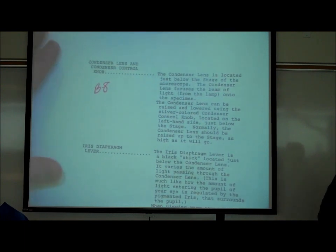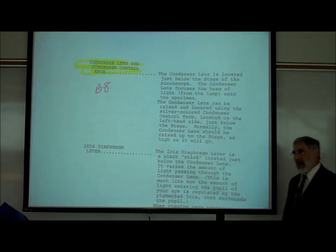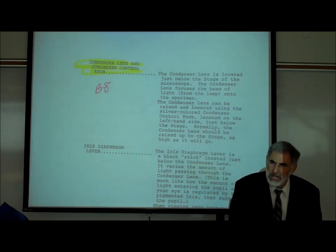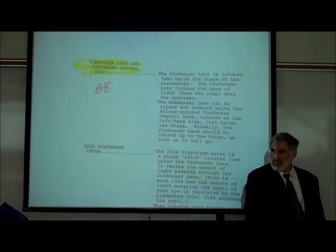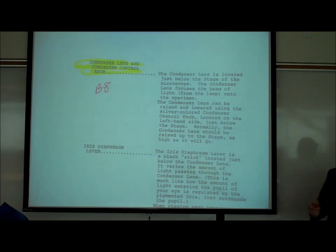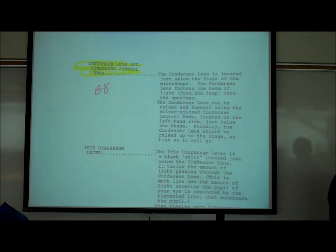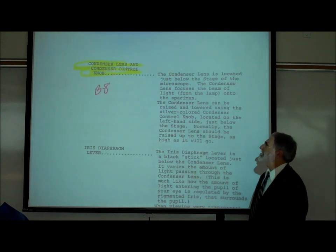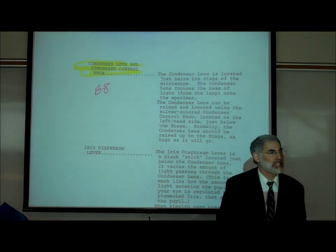What is a condenser lens and condenser control knob? On your microscope, on the left-hand side, there is a black knob right below the stage. As you turn it, it makes something below the stage go up or down. If you look down into the stage, you'll see a lens — that's called the condenser lens, and it focuses the beam of light onto the specimen you're looking at.